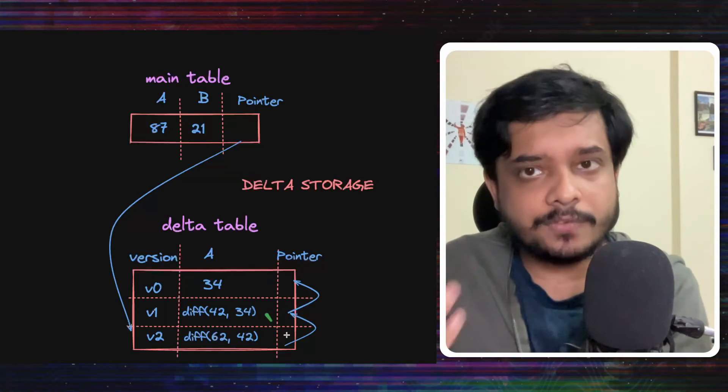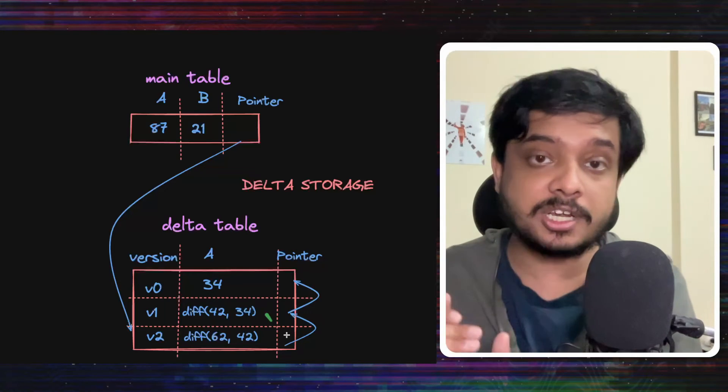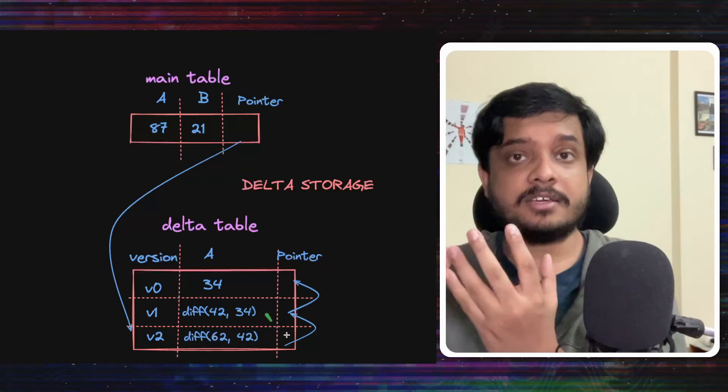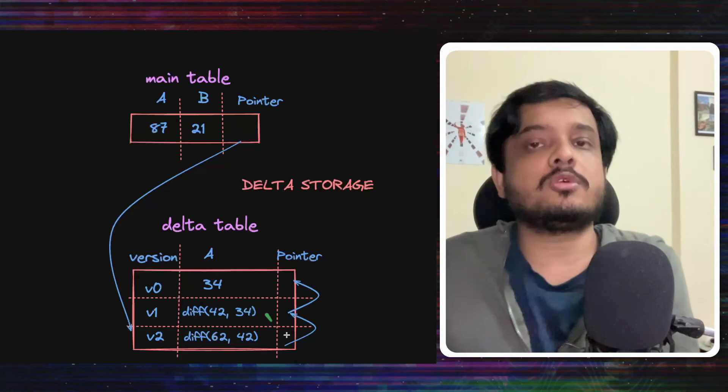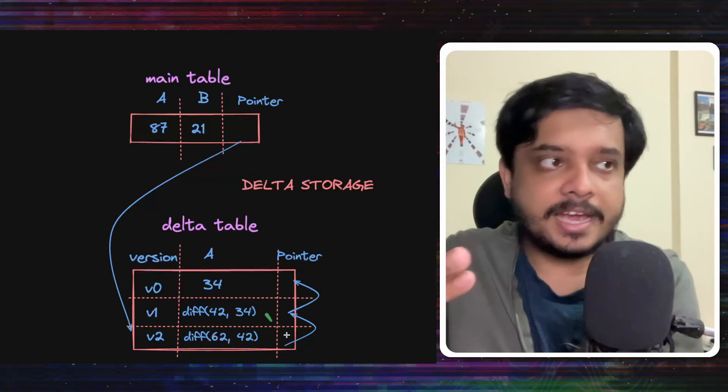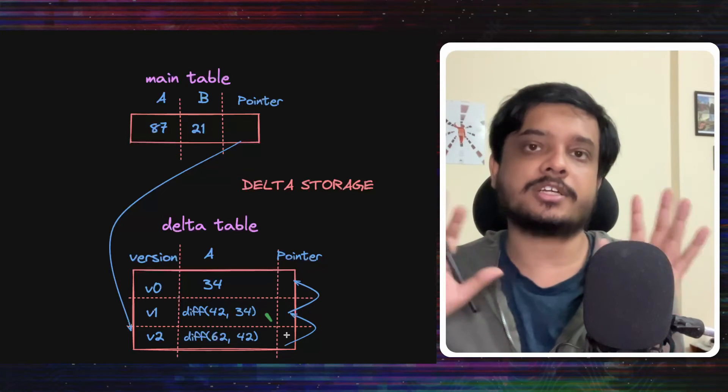To get value of the older versions, the DB would apply these diffs on top of each other, on top of each version and get it. Yes, it would make it slower. But the assumption here is that these values would be seldom required. So, let's save space. And once in a blue moon, if this data is required, we can deal with a slow transaction. That's a trade-off.